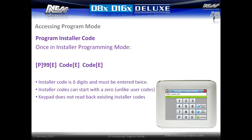Once in installation programming mode, the installer code can be updated by going P99E, entering a new code followed by E, and then entering the code again followed by E. Installer codes are a six-digit number and must be entered twice. Installer codes can start with a zero, unlike user codes. Existing installer codes are not read back by the keypad.